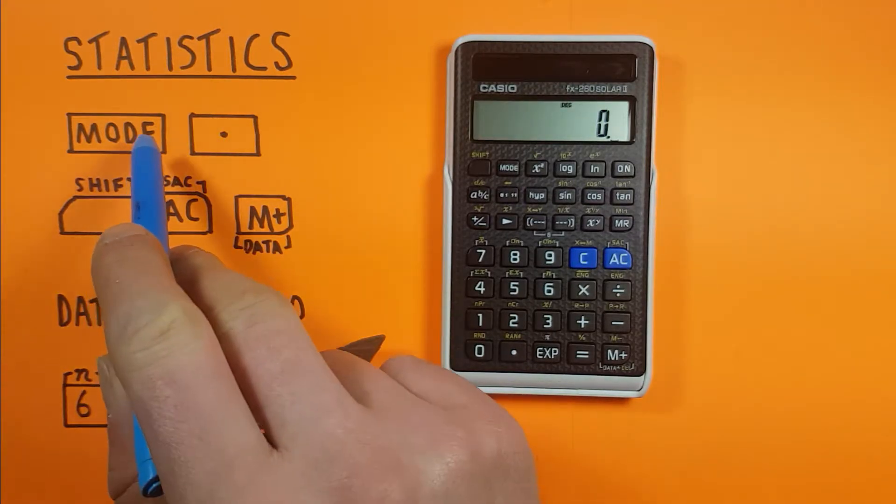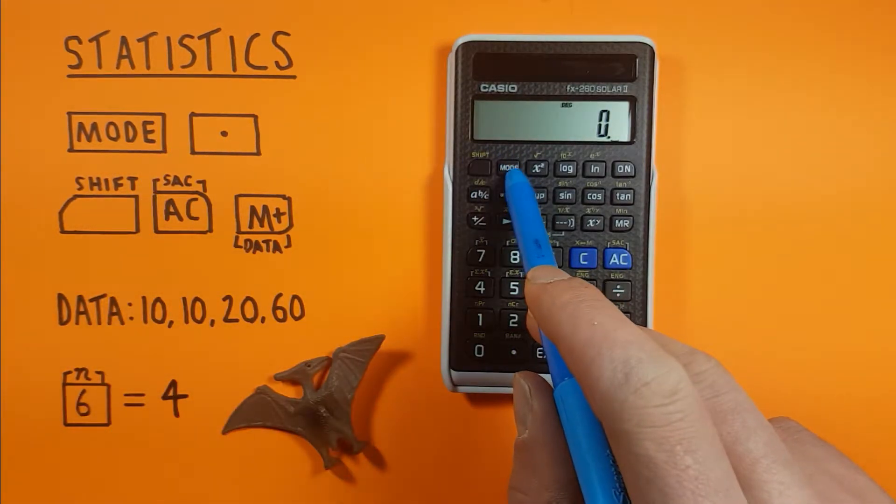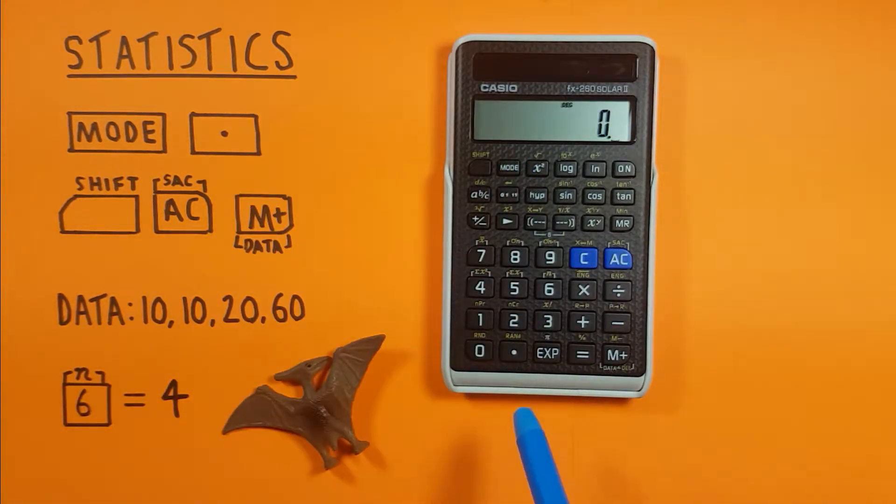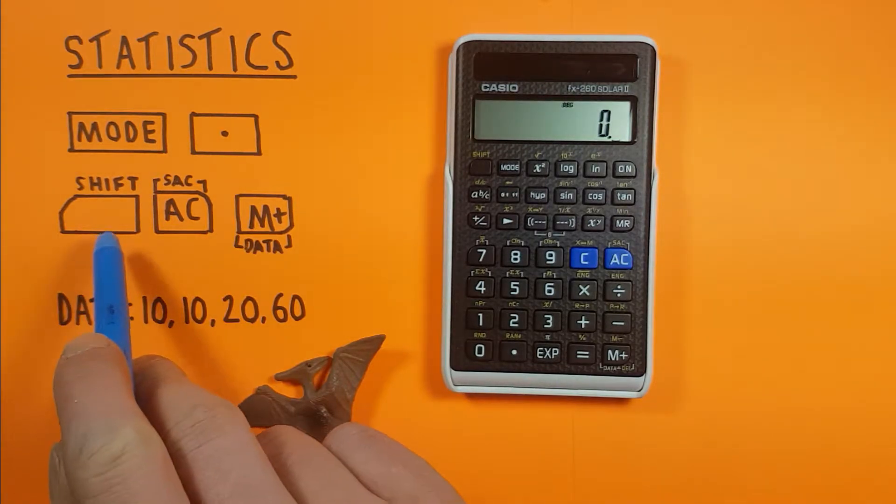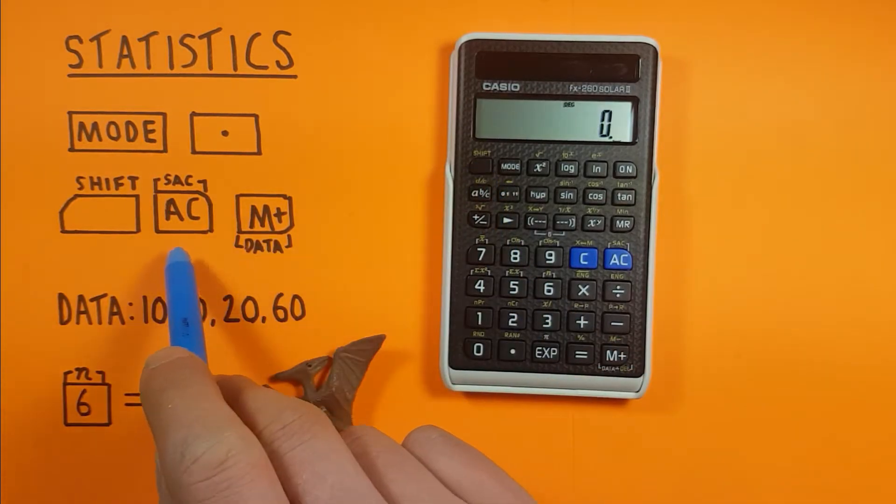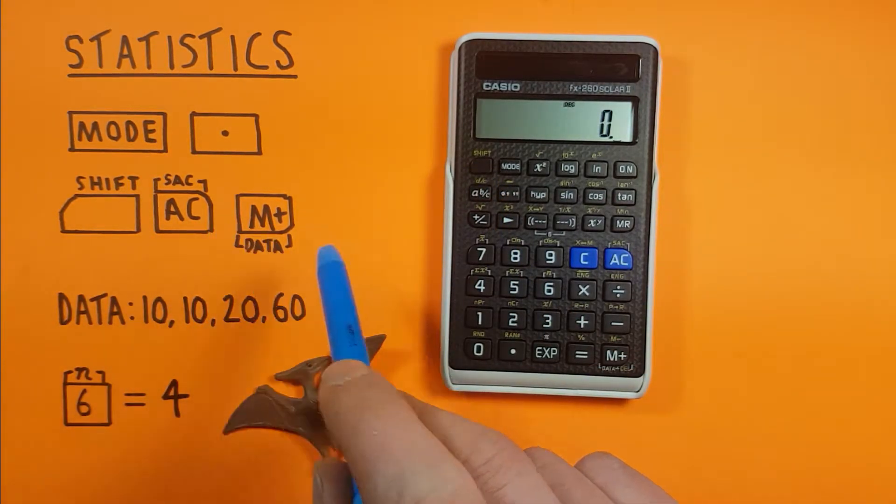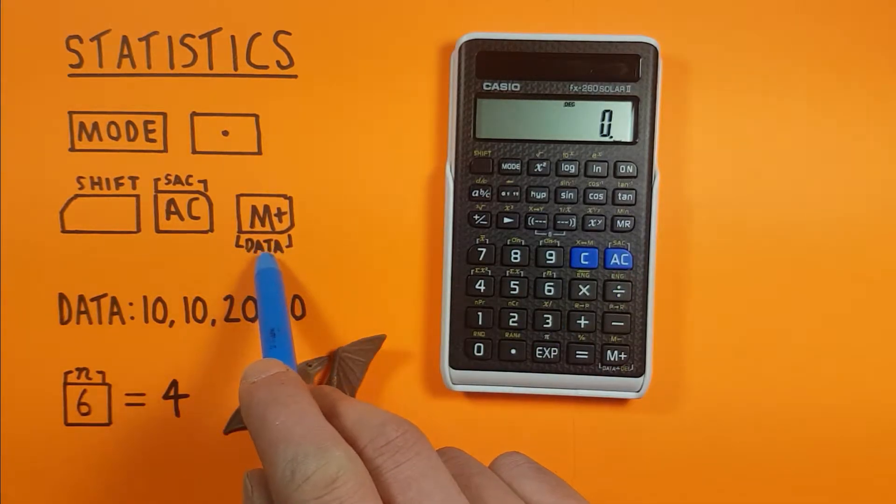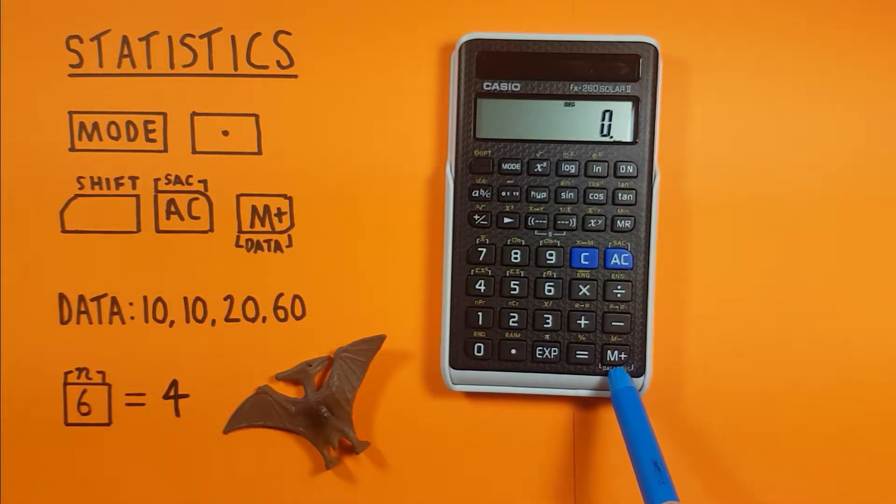To do this we'll be using the mode key, which is located right here. The decimal or period key looks like that and is located down here. The shift key is located in the top left corner. The AC key which is this blue one here, and the M plus key which is down here in the bottom right corner.